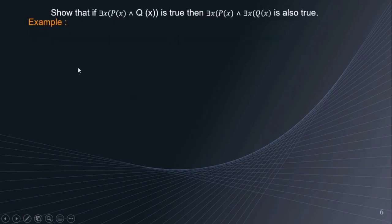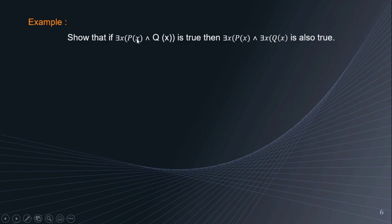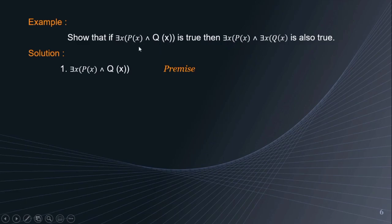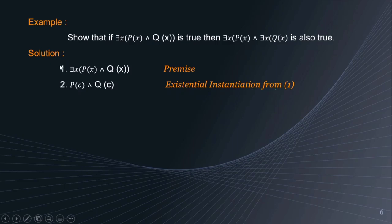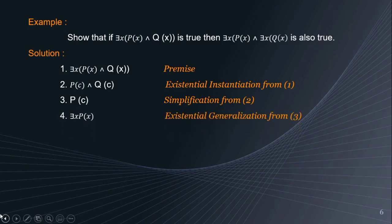For example, we will show that if there exists x, P(x) and Q(x) is true, then there exists x, P(x) and there exists x, Q(x) is also true. To prove: our first premise is there exists x, P(x) and Q(x). Next, we have P(c) and Q(c), done by existential instantiation from premise 1, replacing x by c. Next, we derive P(c) by simplification from step 2. Then, there exists x, P(x) is done by existential generalization from step 3.